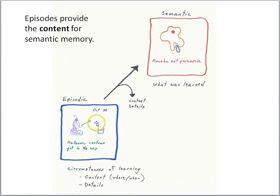So episodic memories are providing the information that will later be stored in our semantic memory system. Now if that storage is successful, then we will have knowledge about the world.